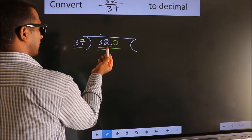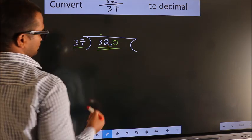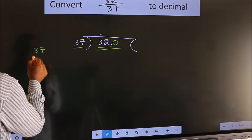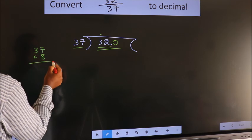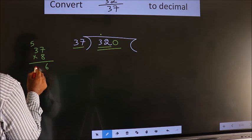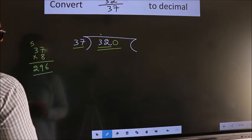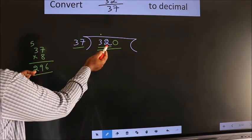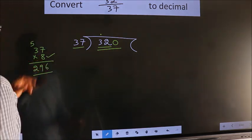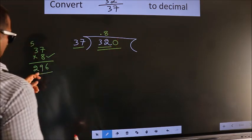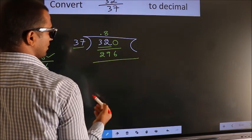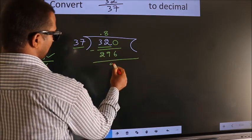A number close to 320 in the 37 table is, let us check with 8. So 37 times 8: 8 times 7 is 56, put 6 down, carry 5. 8 times 3 is 24 plus 5 equals 29. So 296, close to 320, so we go with 8. 37 times 8 is 296. Now we should subtract, we get 24.